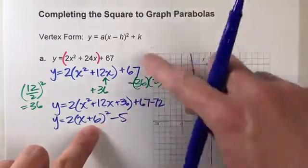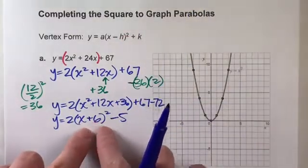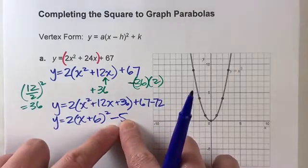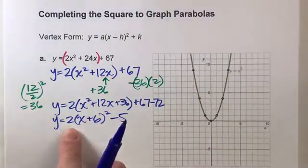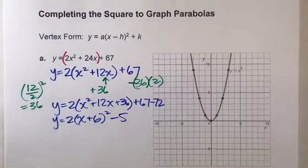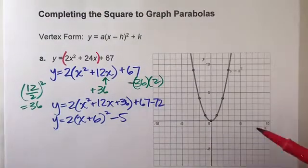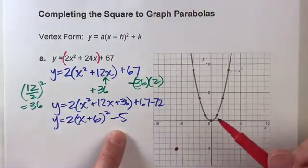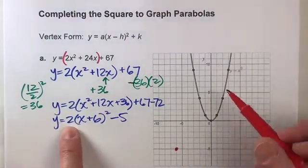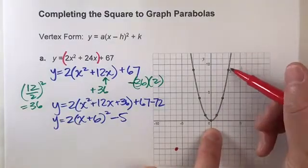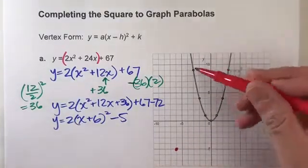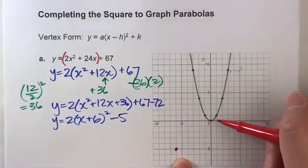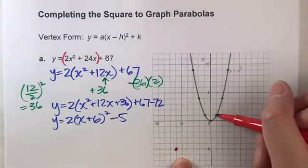Notice, my vertex has been shifted to the left 6 steps and down 5 steps. And my parabola has a vertical stretch of 2. And now I can actually graph this because I know exactly where it's going to be. So shifted 6, down 5. There's my vertex. And with a vertical stretch of 2, that means everything's going to be stretched up vertically by a factor of 2. So see this one point over 1? It's going to be over 1 up 2 instead of up 1.